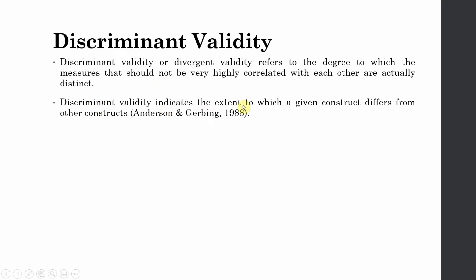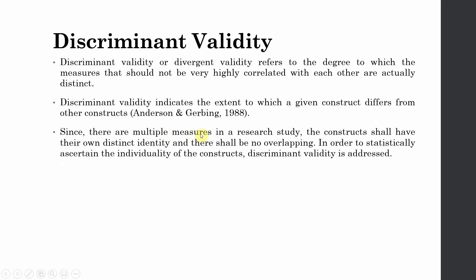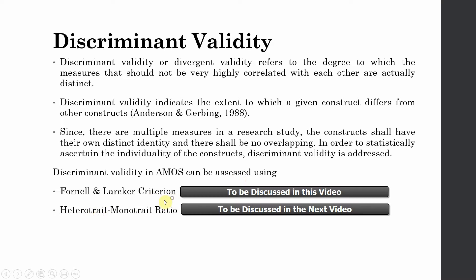Discriminant validity indicates the extent to which a given construct differs from other constructs in the study. Since there are multiple constructs in a research study, the constructs shall have their own distinct identity and there shall be no overlapping. In order to statistically ascertain the individuality of the constructs, discriminant validity is established. In AMOS, discriminant validity can be assessed using the Fornell-Larcker criterion and the Heterotrait-Monotrait (HTMT) ratio.